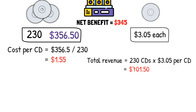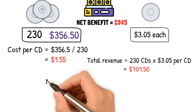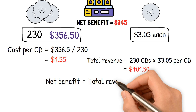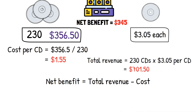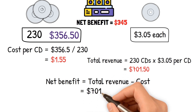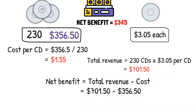The net benefit is then calculated by subtracting the cost from the revenue: net benefit equals total revenue minus cost. In our case, net benefit equals $701.50 minus $356.50, which is $345.00.